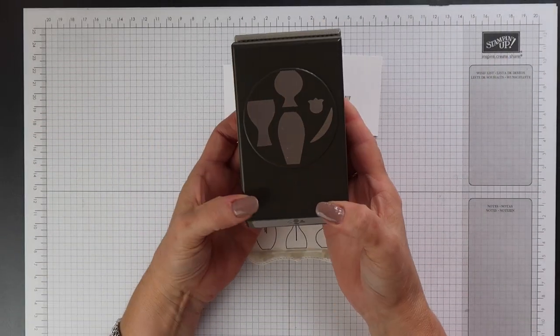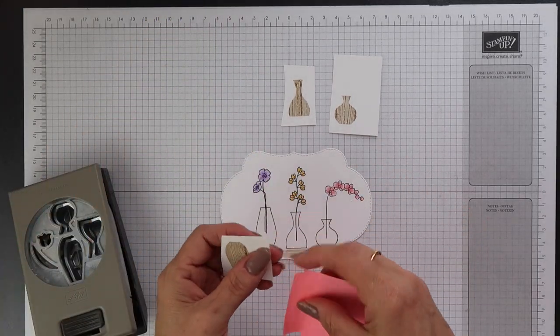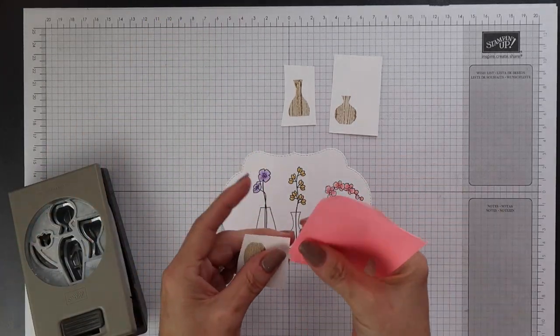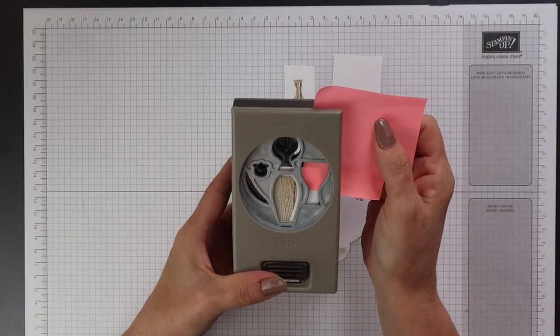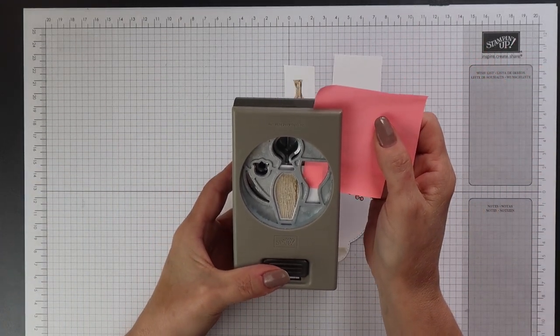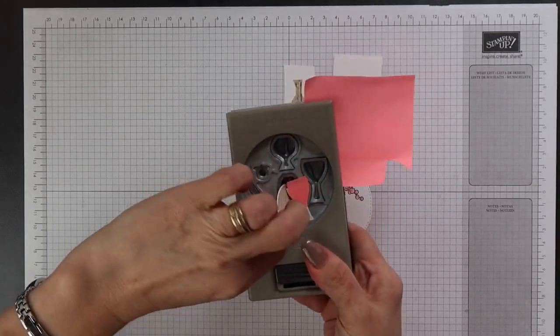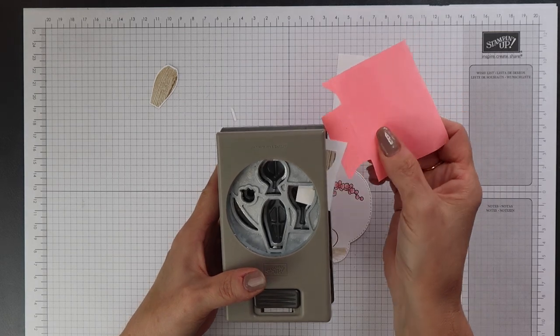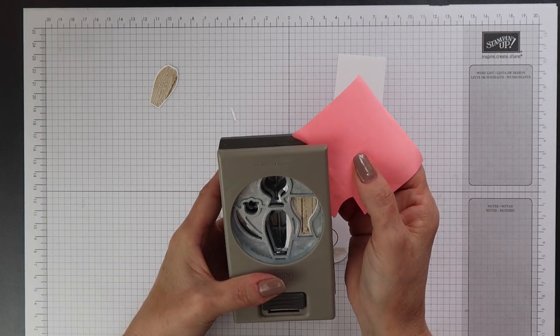The Varied Vases Stamp Set coordinates with the Vases Builder Punch. So I'm going to use this to punch out my images. I've separated my vases and because the resulting pieces of card are so small they're too small to hold and punch so I'm just using a post-it note to help me do this.